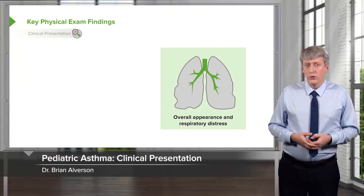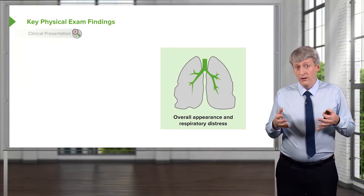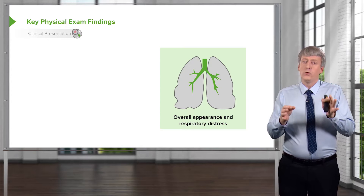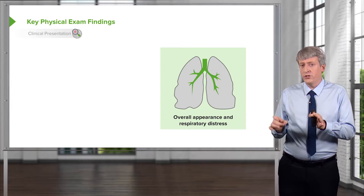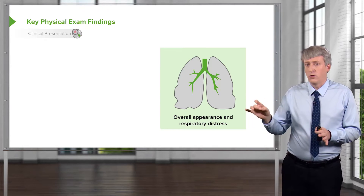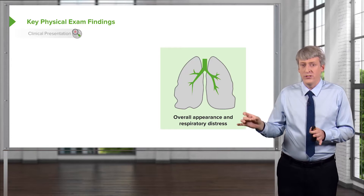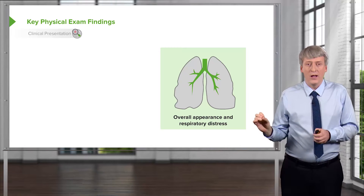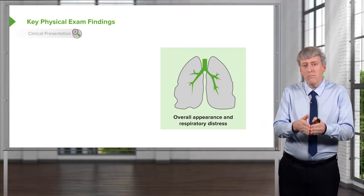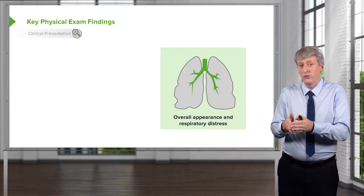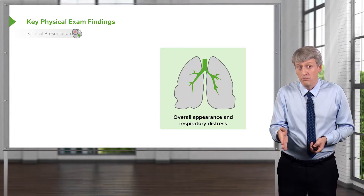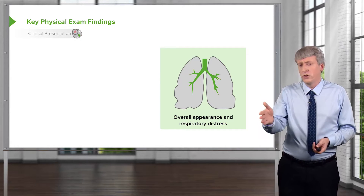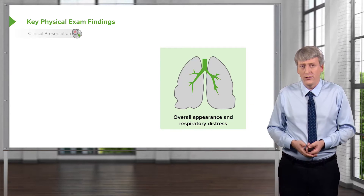When examining a child you suspect has asthma, it's important first to note their overall appearance and whether they have respiratory distress. In a child with asthma who is in respiratory distress, we address their respiratory distress first and ask about the differential diagnosis later. The typical paradigm of differential diagnosis before management is put on hold in asthma because we may not have time. Asthma is by far the most common cause of wheeze in children, so we address asthma first if they're in respiratory distress and do studies later.